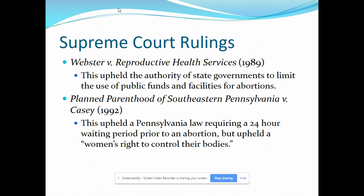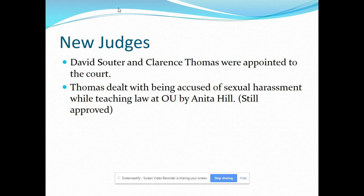Bush appointed two judges while in office: David Souter and Clarence Thomas. Clarence Thomas was an African-American Supreme Court judge who replaced Thurgood Marshall, a longtime judge. The controversy with Clarence Thomas was that he was accused of sexual harassment by Anita Hill, an OU law professor — they had taught law together. Congress still approved him because of lack of evidence.